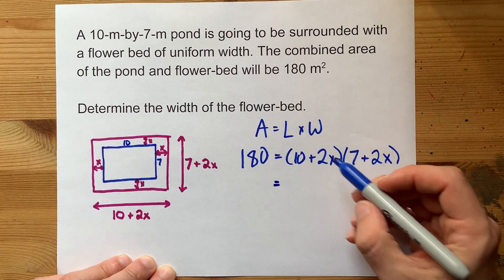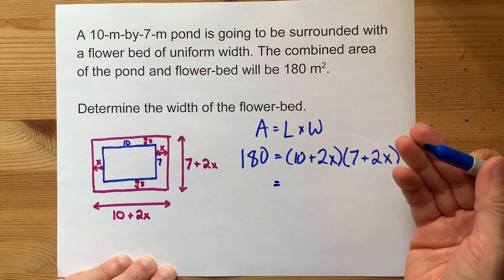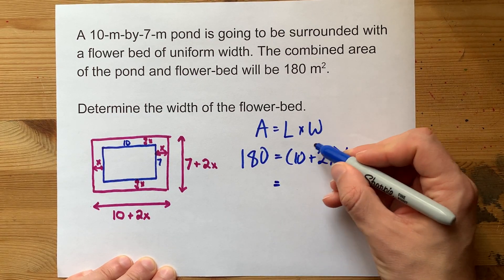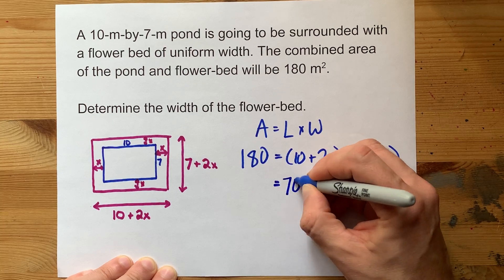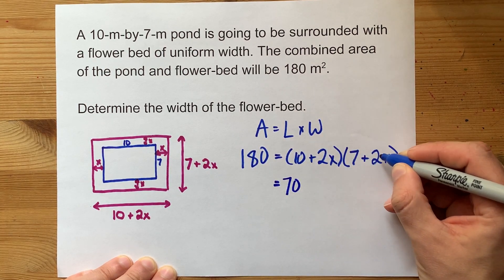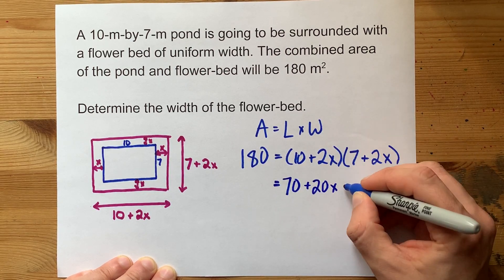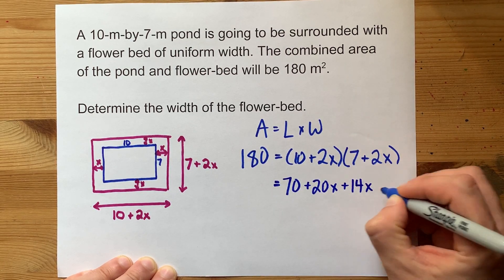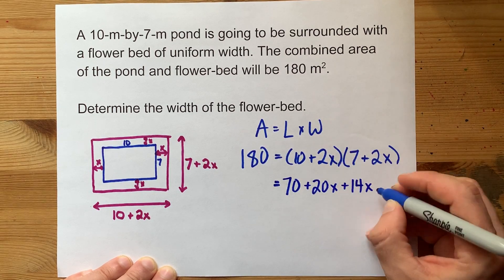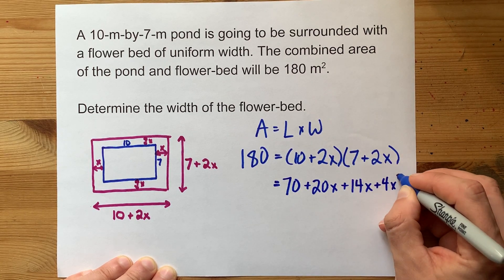Let's multiply out these two brackets. We call this foiling here in Canada. It's 10 times 7 for 70. 10 times 2X is plus 20X. 2 times 7 gives me 14X. And 2X times 2X is plus 4X squared.